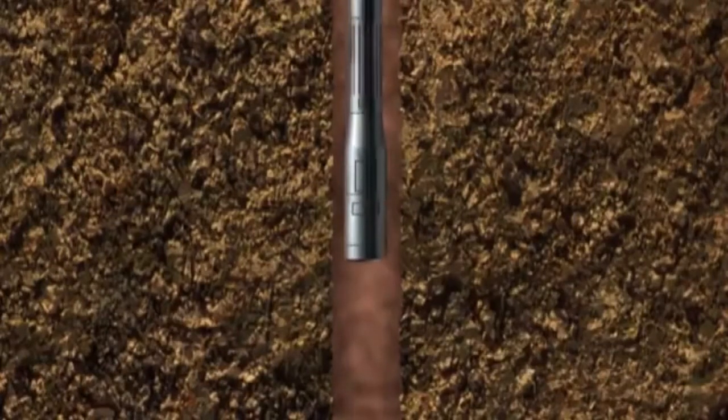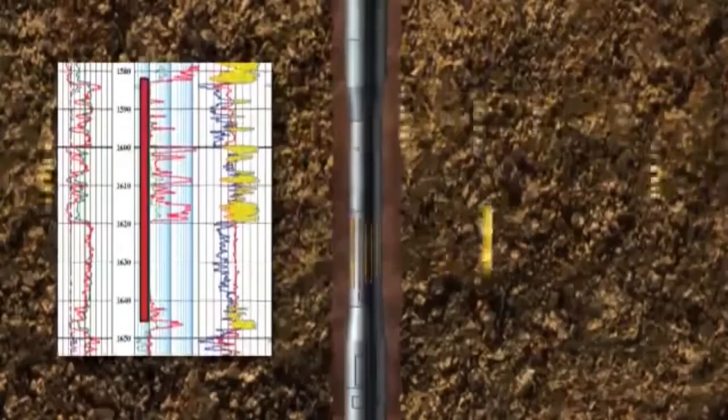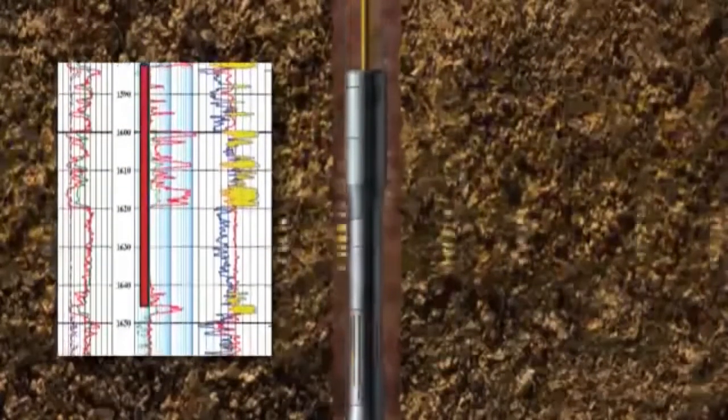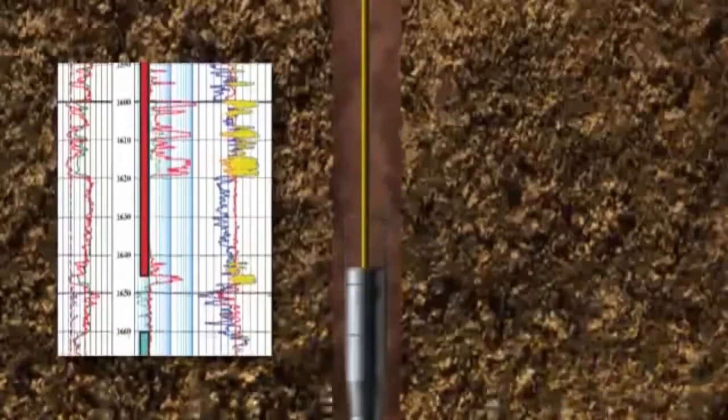In the second stage, coring may be replaced or complemented by running a suite of geophysical logging tools, which are run on electric wireline. These are instruments that can measure the physical properties of the rocks as they pass slowly through the wellbore.